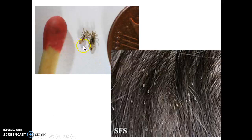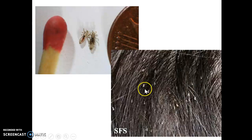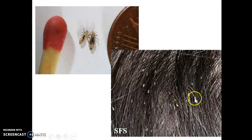Here are the lice — you can see this is a match head, so they're really small. They actually look like a little sesame seed — kind of that shape and size. And these are the nits in the hair. Hard to tell them from dandruff except that they're glued on. If you touch dandruff it'll fly off, but a nit is stuck on there — you can't pick it out; it'll slide off the end of the hair. That's how you get them off: you have to slide them off the end of the hair.